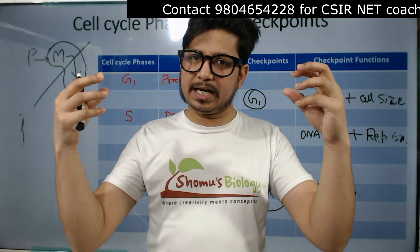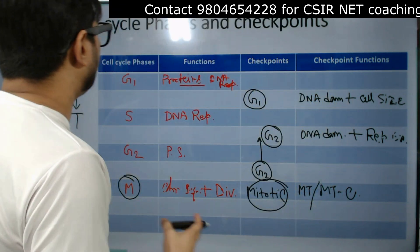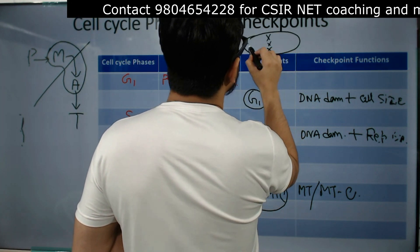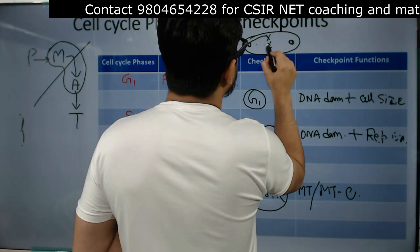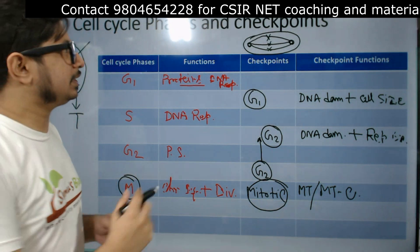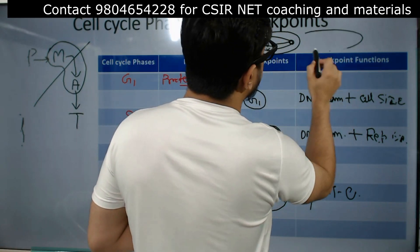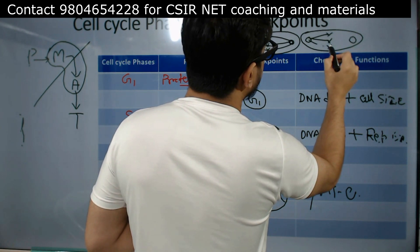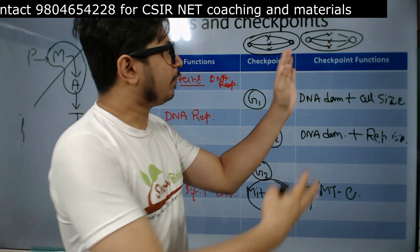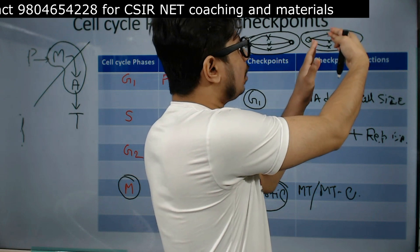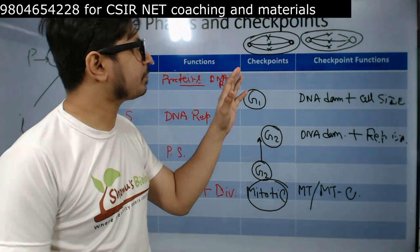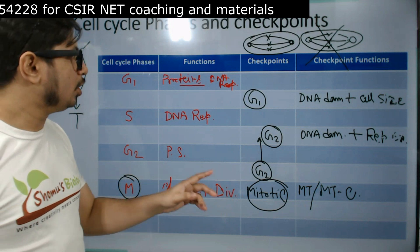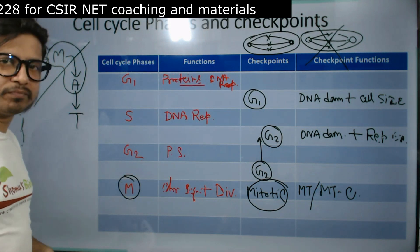The role of the spindle assembly checkpoint is to check that both MTOCs are properly connecting to the kinetochores. If there is any error — for example, if the microtubule from one pole is not connected to the kinetochore — the cell will not progress from metaphase to anaphase. This is how the spindle assembly checkpoint prevents faulty chromosome segregation.